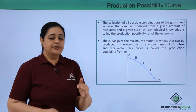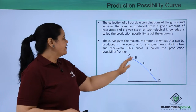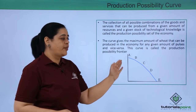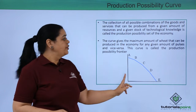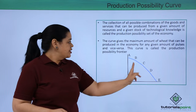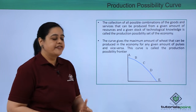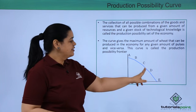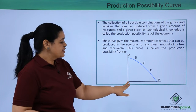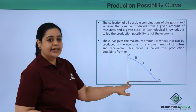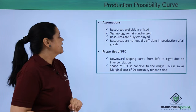The PPC tells us the maximum amount of wheat that can be produced in an economy for a given amount of pulses and vice versa. You can see the curve being shown, and the different alternatives are placed on it — for example, point A appears here because wheat production was 0. This curve is the Production Possibility Curve or Production Possibility Frontier.